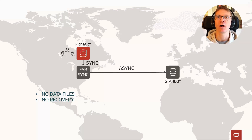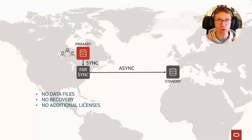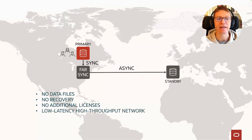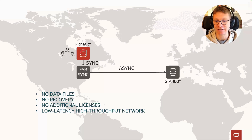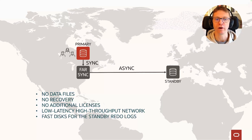Farsync does not require the same compute and storage as a normal database, and especially it does not require any additional licenses. As long as all the databases in your configuration are covered by the Active Data Guard option, you can create as many Farsync instances as you want, even on external servers, without any additional license. All they need is a fast network with high throughput — because you don't want to add latency for synchronous transactions — and also fast disks, because Farsync instances still have standby redo logs and you don't want additional delay syncing data to those disks.